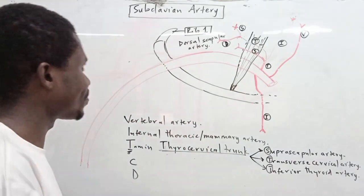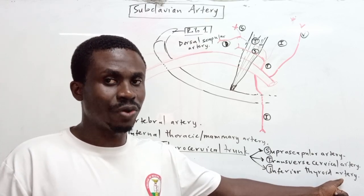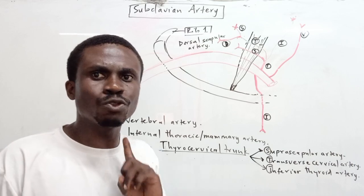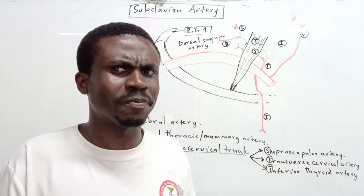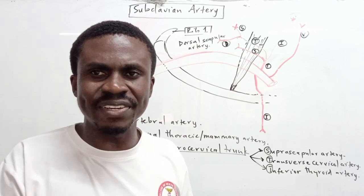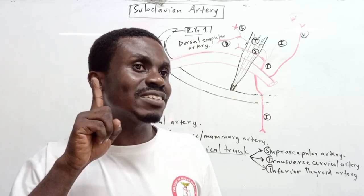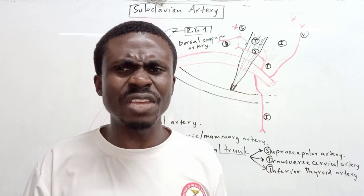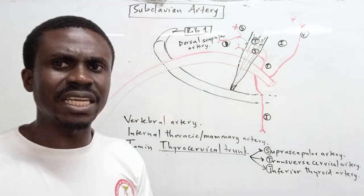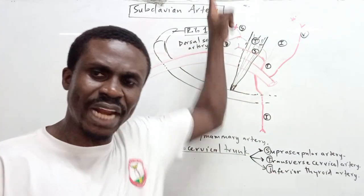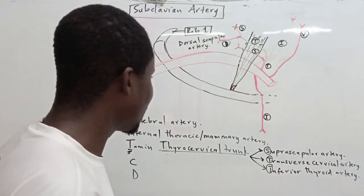The inferior thyroid artery, as it goes toward the thyroid gland, also gives off other branches: the ascending cervical artery going upward in the neck, and the inferior laryngeal artery supplying the larynx. It may also give pharyngeal branches and tracheal branches. The main branches to remember are the ascending cervical and inferior laryngeal arteries.